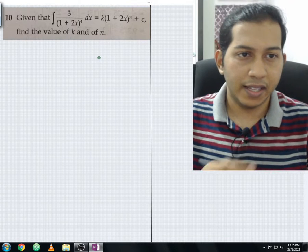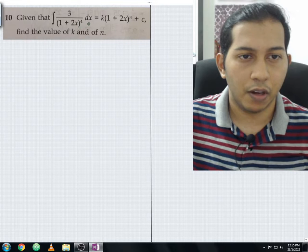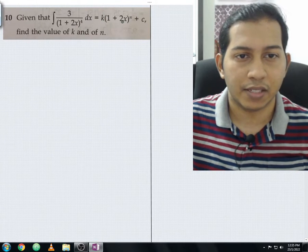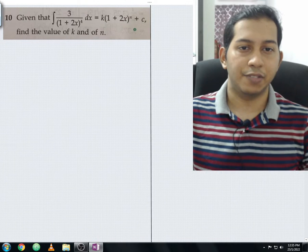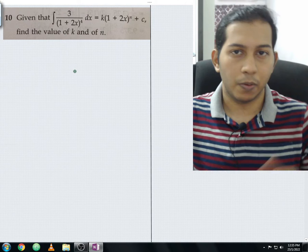Let me read the question now. Given that integral 3 divided by (1+2x) to the power of 4 with respect to dx equals k(1+2x) to the power of n plus c, find the value of k and n. So this is the overall question.